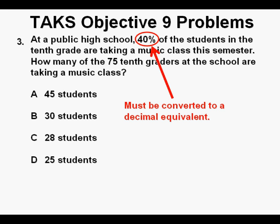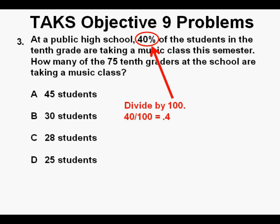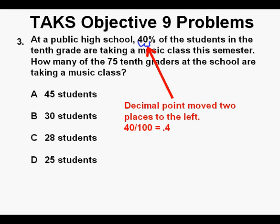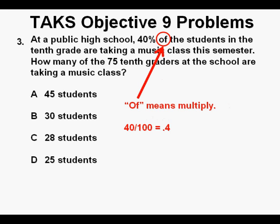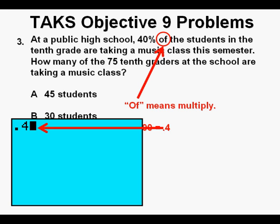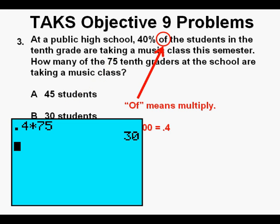To solve this, 40% needs to be converted to a decimal equivalent by dividing the percentage by 100 — 40 divided by 100 equals 0.4. You can also just move the decimal point two places to the left. Remember that the word 'of' means multiply. So in the calculator, we multiply 0.4 by 75, press Enter, and we get 30 students. We see that answer here, so we circle our correct answer B.